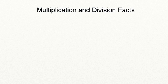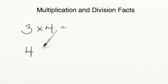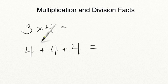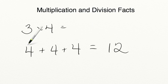When you're trying to remember your multiplication and division facts, it's important to remember that multiplication is repeated addition. So let's say you were trying to remember what 3 times 4 is equal to. All you're doing is adding 4 three times. So what is 4 plus 4 plus 4? 4 plus 4 is 8, plus 4 is 12. It's helpful to remember how many of the number you have, and then you can add or skip count to get to that number.